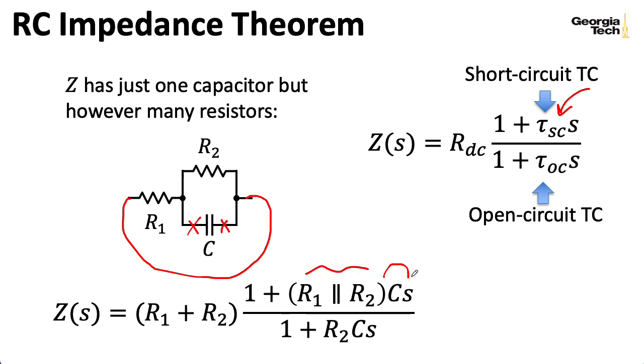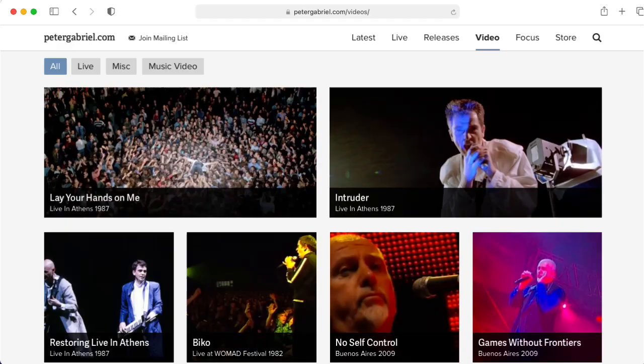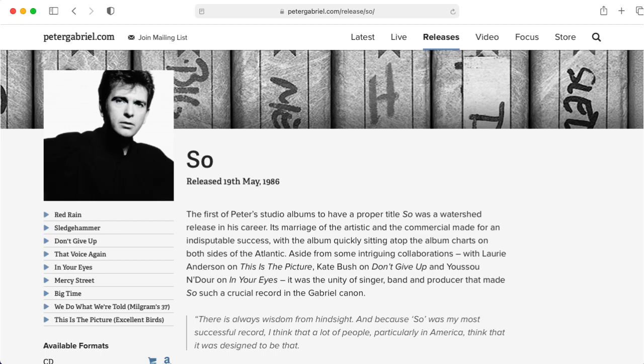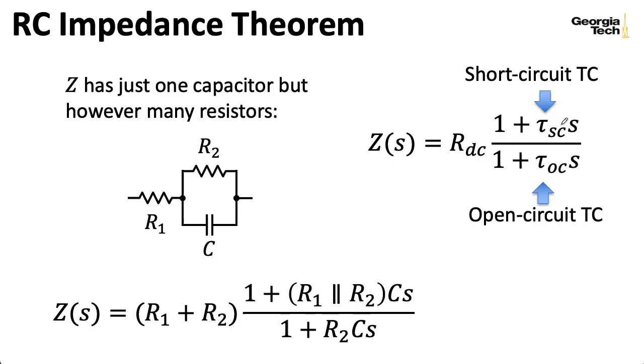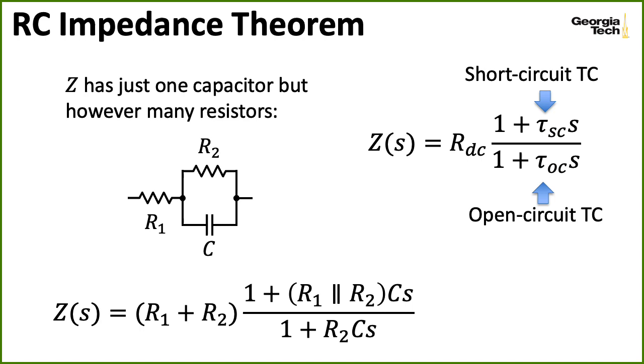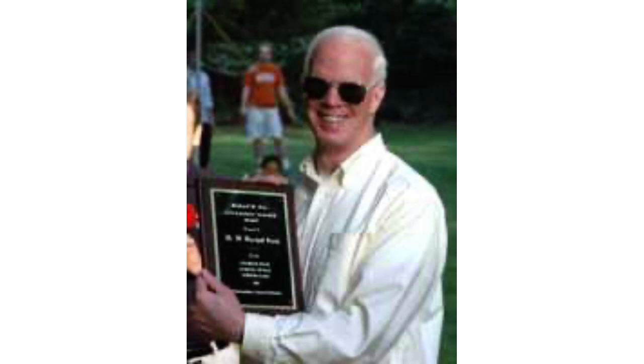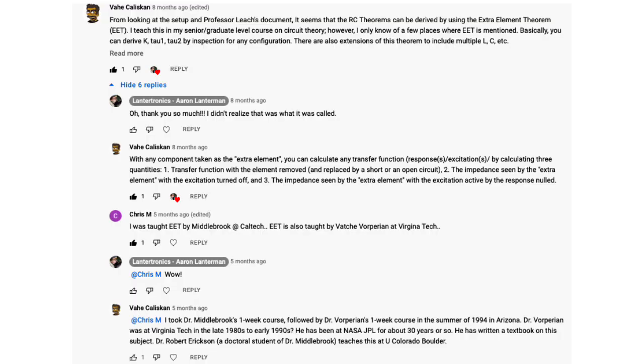Here's how I remember that the short circuit time constant goes in the numerator and the open circuit goes in the denominator. I like to think about people who make good music, and that makes me think about Peter Gabriel. Peter Gabriel released an album called So. So I spell the word so going top to bottom in my head. The S goes on top and the O goes on bottom. I learned about this theorem from my colleague Marshall Leach. I later learned from a viewer on YouTube that this is a special case of what's called the extra element theorem.